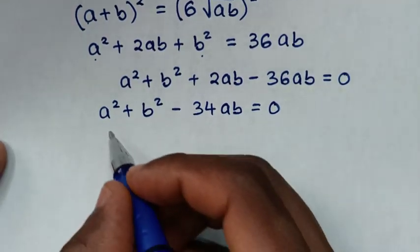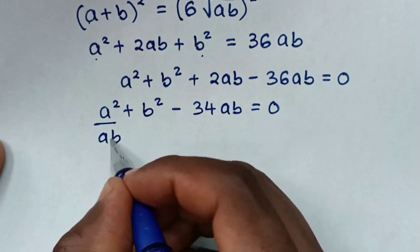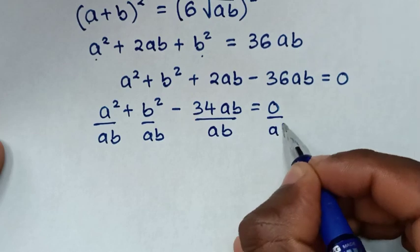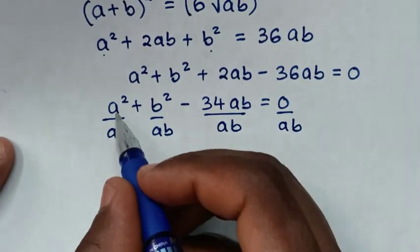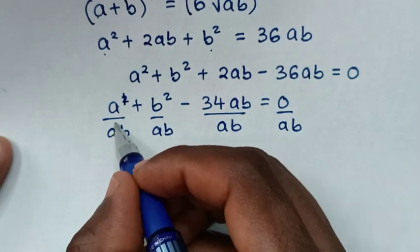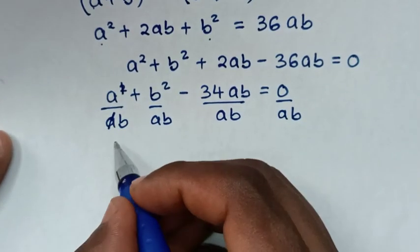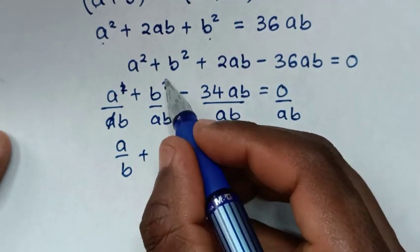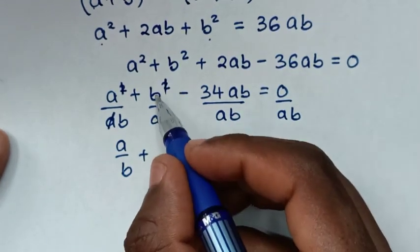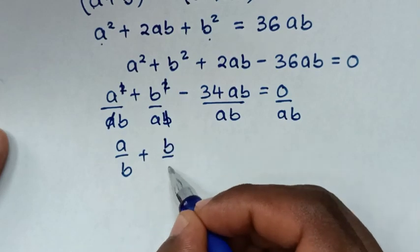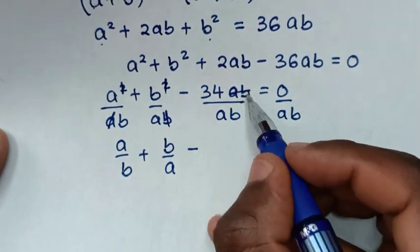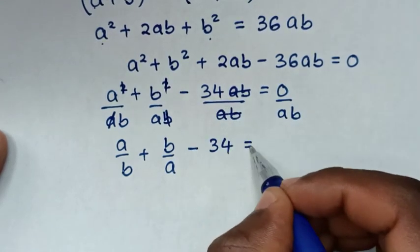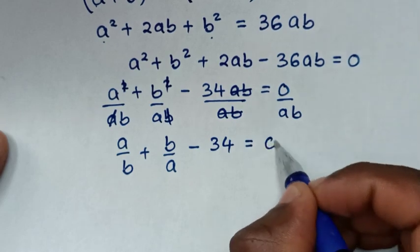Then in the next step, we divide by ab in both sides. So a squared divided by ab gives a over b. Then b squared divided by ab gives b over a. Minus ab divided by ab, so it will be minus 34 is equal to 0.